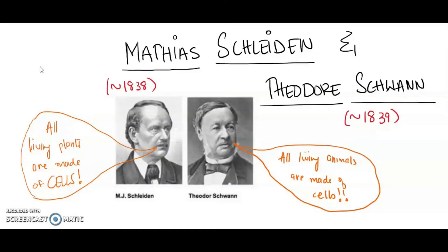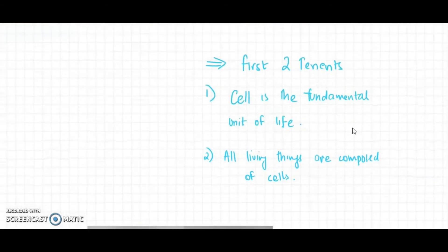It was upon the work of Hooke and Leeuwenhoek, among others, that 19th-century scientists Matthias Schleiden and Theodor Schwann built their cell theory. Schleiden, a German botanist and professor of botany at the University of Jena, extensively studied plant tissue and concluded that all living plants are made up of cells. Schwann, his friend and fellow scientist, was a German physiologist who extensively studied animal tissue and made similar microscopic observations — that all living animals are made up of cells. Together, Schleiden and Schwann are credited for developing the first two tenets of the cell theory: that the cell is the fundamental unit of life, and that all living things are composed of cells.